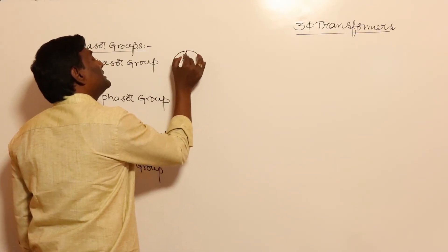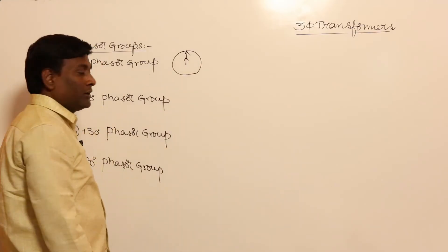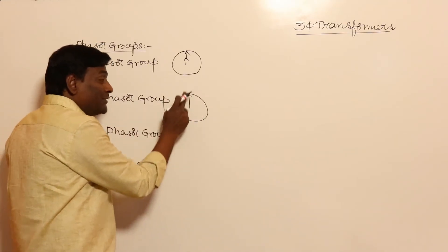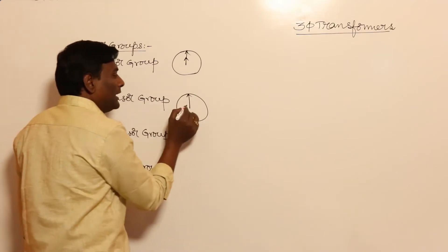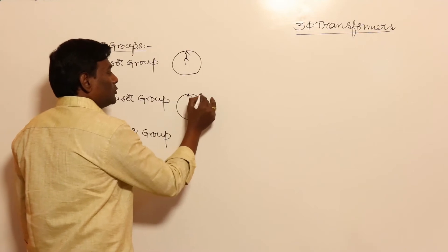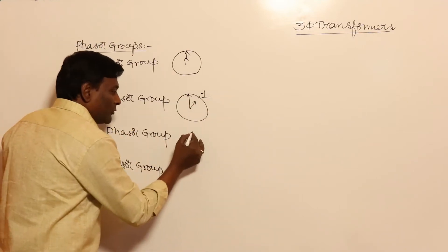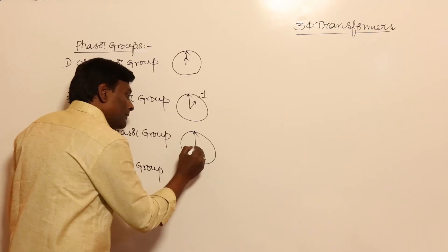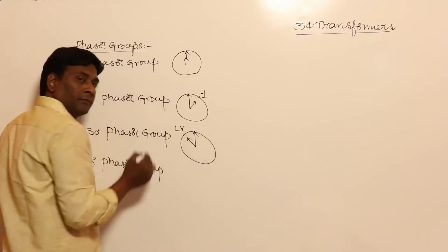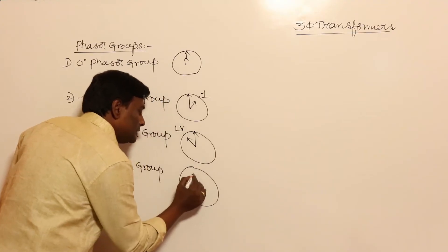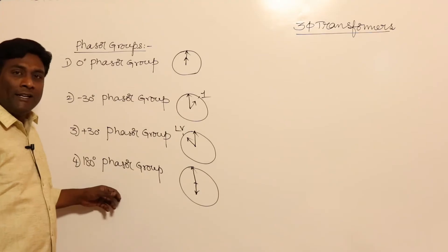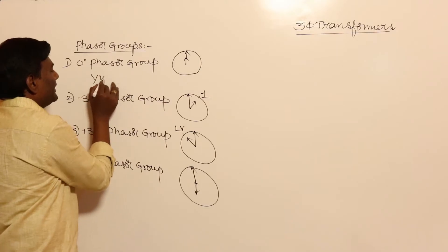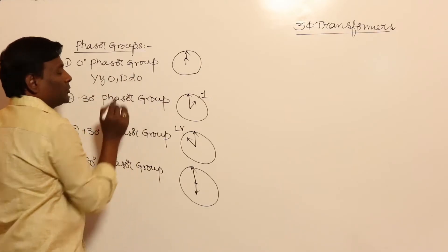If I draw the clock diagram: for 0 degrees, HV is here and LV is also here. For minus 30 degrees, HV is here and LV lags, so LV is at position 1 on the clock. For plus 30 degrees, LV leads HV. For 180 degrees, LV is on the opposite side from HV.